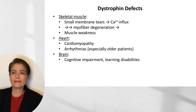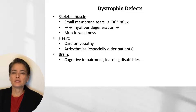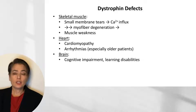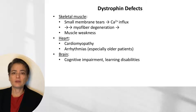When we get defects in dystrophin function, we can see a variety of different effects. In skeletal muscle, it results in small membrane tears leading to an influx of calcium ions, which over time leads to myofiber degeneration and the muscle weakness that characterizes the dystrophinopathies. In addition, the heart can be affected, resulting in cardiomyopathy or arrhythmias, typically seen in older patients. Some patients with dystrophinopathies also have cognitive impairment and learning disabilities.